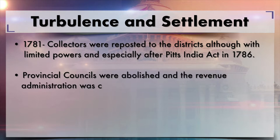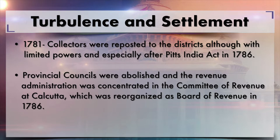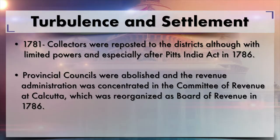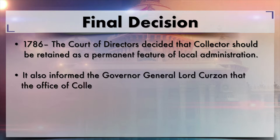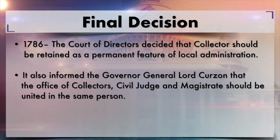In 1781, collectors were reposted to the districts with limited powers. After Pitt's India Act, passed in 1786, the provincial councils looking after revenue collection were abolished, and revenue administration was concentrated in the Committee of Revenue at Calcutta, reorganized as the Board of Revenue in 1786. In 1786, the Court of Directors decided to retain the collectors and stated that it should be made a permanent feature of local administration.